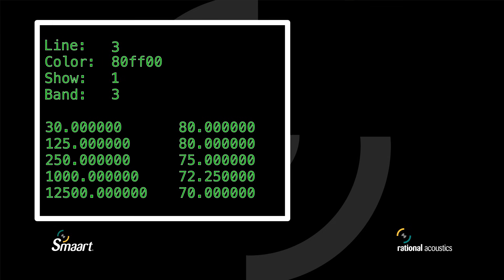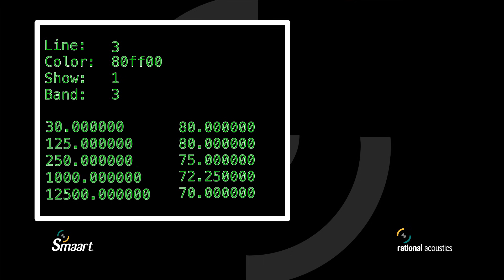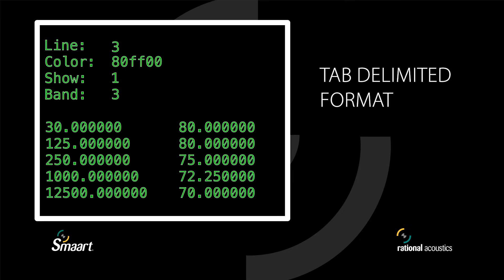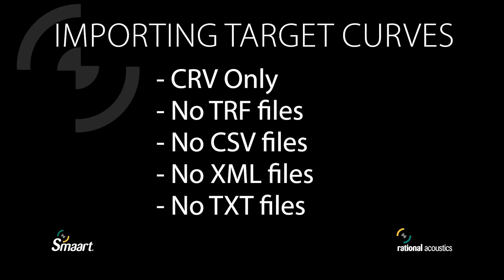With these four header lines out of the way, you're free to enter your data. Target curve data is formatted as two columns — frequency and level — separated by a tab character. This is known as tab-delimited formatting. SMART will not accept data separated by commas or spaces. If a target curve you've imported isn't shown in the target curves menu, this is a good thing to double-check. Additionally, SMART is unable to import target curves saved in text or CSV formats, so make sure yours are saved as CRV files.